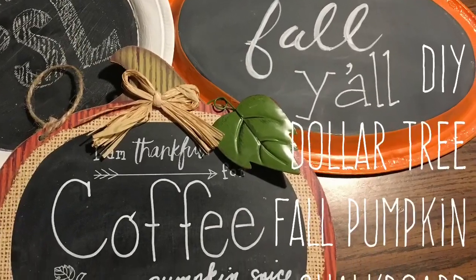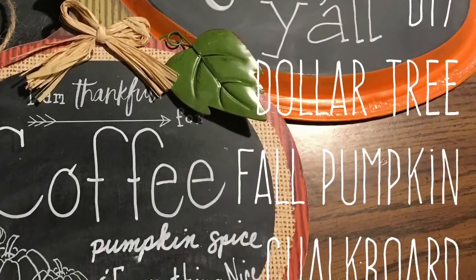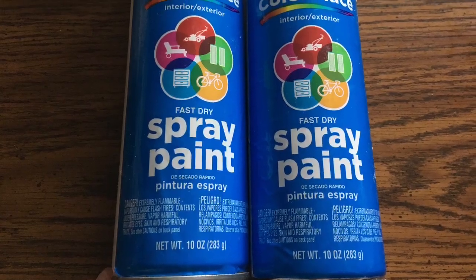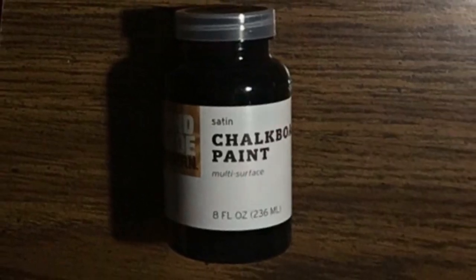Hi everybody, welcome back to my channel. Today we're gonna make a DIY Dollar Tree pumpkin chalkboard for fall. You're gonna need a silver tray from the Dollar Tree, some black 97 cent spray paint from Walmart, some orange or white paint at your choice, and optional is some chalkboard paint if you have some black chalkboard paint.